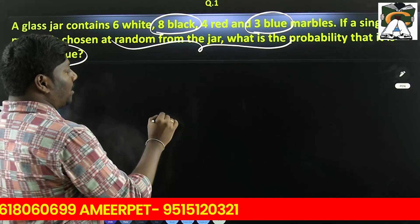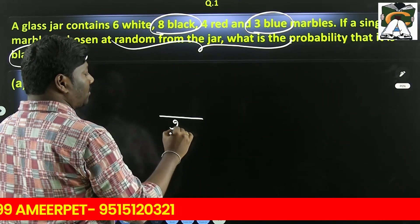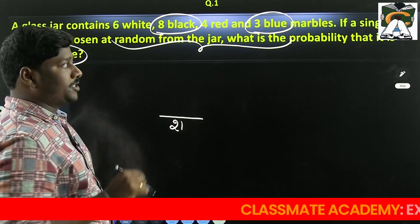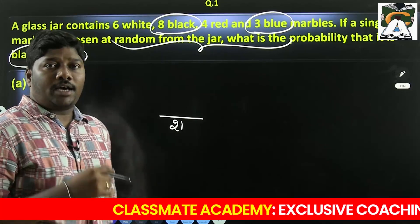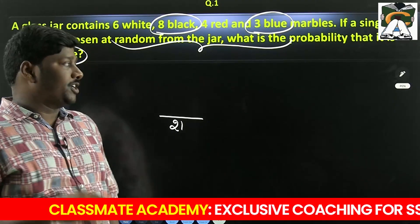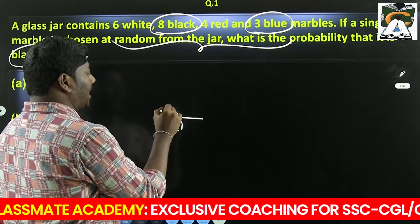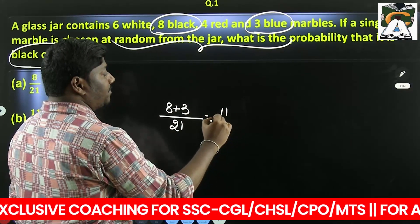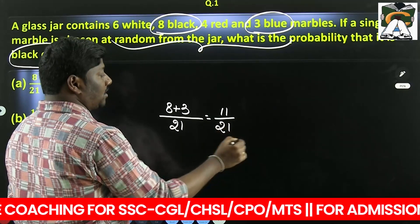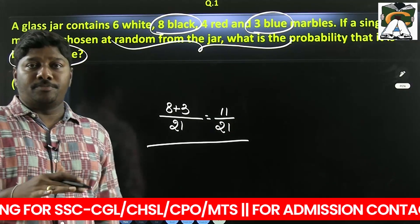This is the basic question of probability. Blue marbles 3, black marbles 8. So overall marbles 21. We have to select the marble either black or blue. And we have to sum the probability. So 8 black, 3 blue.